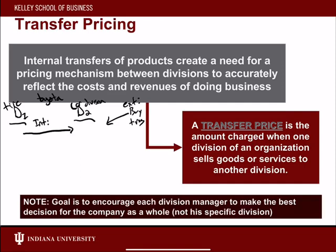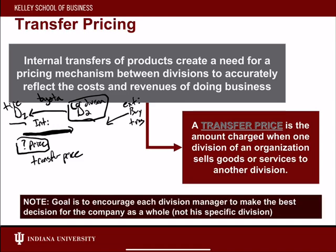Transfer pricing asks: division one is going to sell those tires to division two at what price? The price that goods are transferred within a division is the transfer price. It's the same as buying externally, but instead of buying externally, division two would buy internally at the transfer price rather than a market price from an external vendor. The basic definition is the amount charged when one division of an organization sells goods or services to another division.